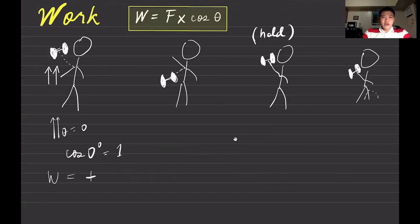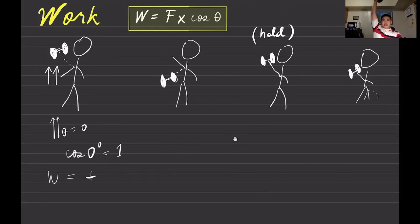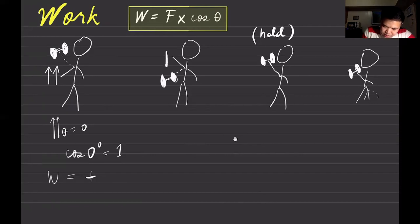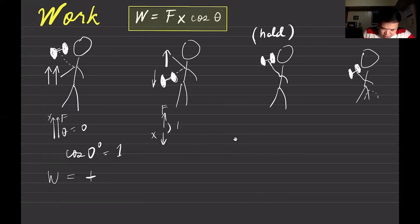What if I lower the dumbbell down? The force I apply is still upward — it's heavy, so I'm still supporting it — but the distance covered is going downward. So the angle between the force (upward) and the distance (downward) is now 180 degrees. Cosine of 180 degrees is negative one, so the work in this situation is negative work.